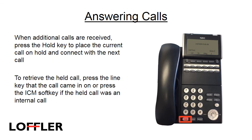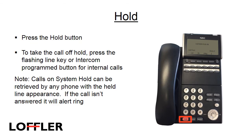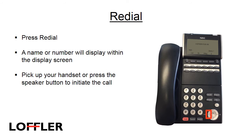When additional calls are received, press the hold key to place the current call on hold and connect with the next call. To retrieve a held call, press the line key that the call came in on, or press the ICM soft key if the call was held from an internal call. To place a call on hold, press the red hold button. You can safely place the handset on hook or press the speaker or headset button without ending the call. To take a call off hold, press the flashing line key or the intercom button for internal calls. Calls on system hold can be retrieved by any phone with the held line appearance. After a predetermined amount of time, the call will ring back to the extension that originally placed the call on hold. To use the redial function, press redial — a name or number will display within the LCD screen. Pick up your handset or press speaker to initiate the call.